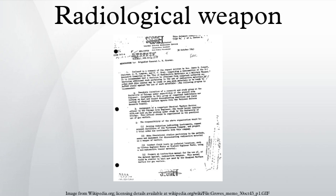The Groves memo states: As a gas warfare instrument, the material would be inhaled by personnel. The amount necessary to cause death to a person inhaling the material is extremely small — it has been estimated that one millionth of a gram accumulating in a person's body would be fatal. There are no known methods of treatment for such a casualty; it cannot be detected by the senses. It can be distributed in dust or smoke form so finely powdered that it will permeate a standard gas mask filter. Radioactive warfare can be used to make evacuated areas uninhabitable, to contaminate small critical areas such as railroad yards and airports, as a radioactive poison gas to create casualties among troops, and against large cities.